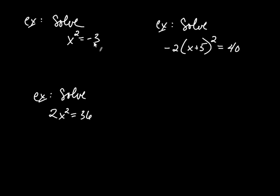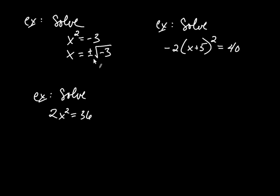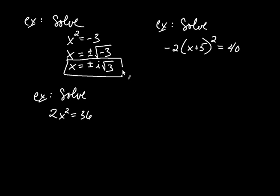The right-hand side can be any real number, including negative. So the quantity squared has been isolated on the left-hand side, and we get x equals plus or minus the square root of negative 3. Whenever you have a negative under the square root, that gives you i. So it's plus or minus i times square root of 3, giving two solutions: positive i root 3 and negative i root 3.